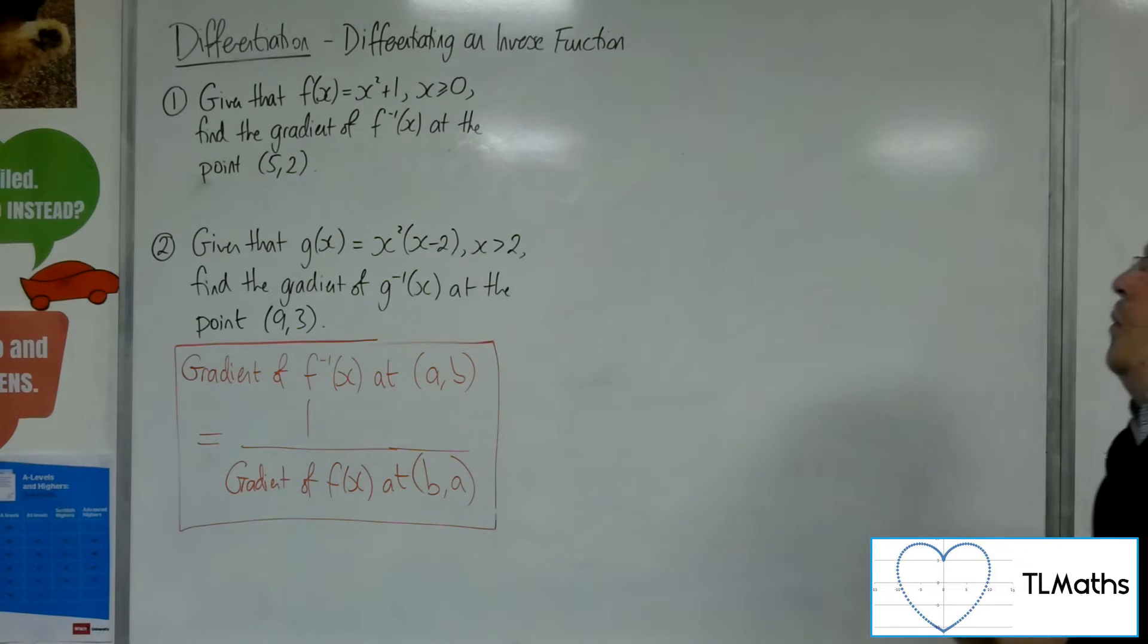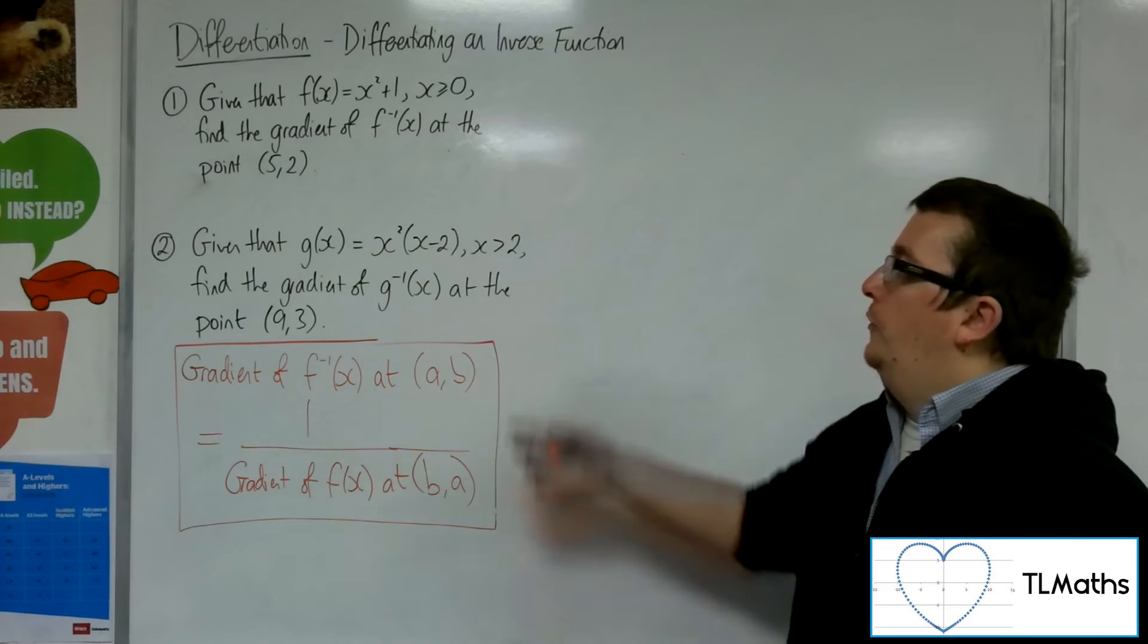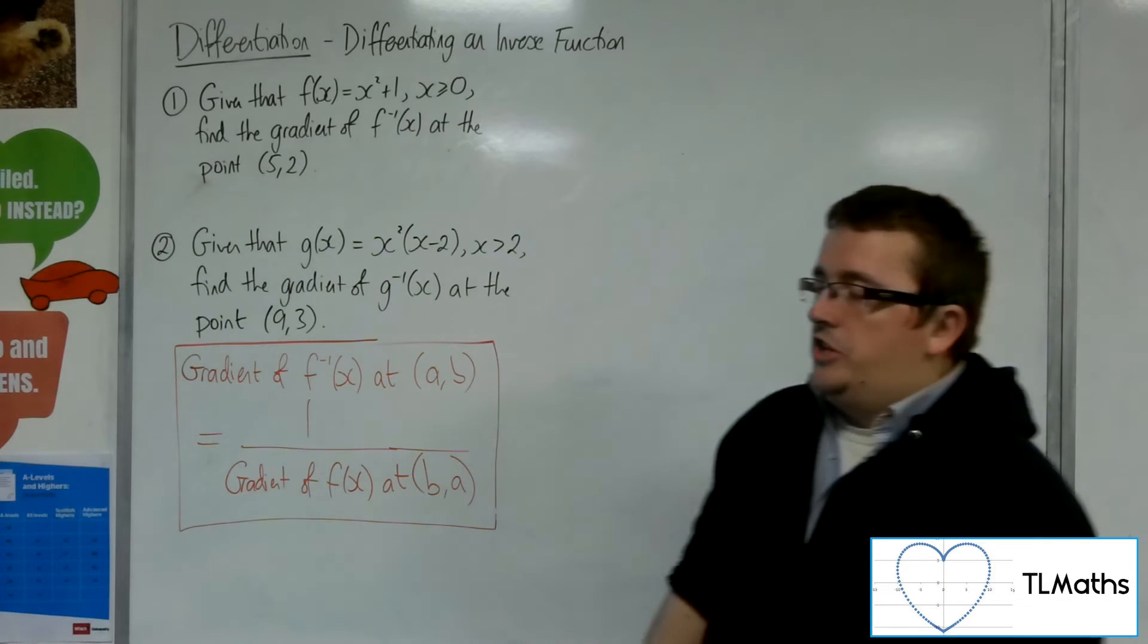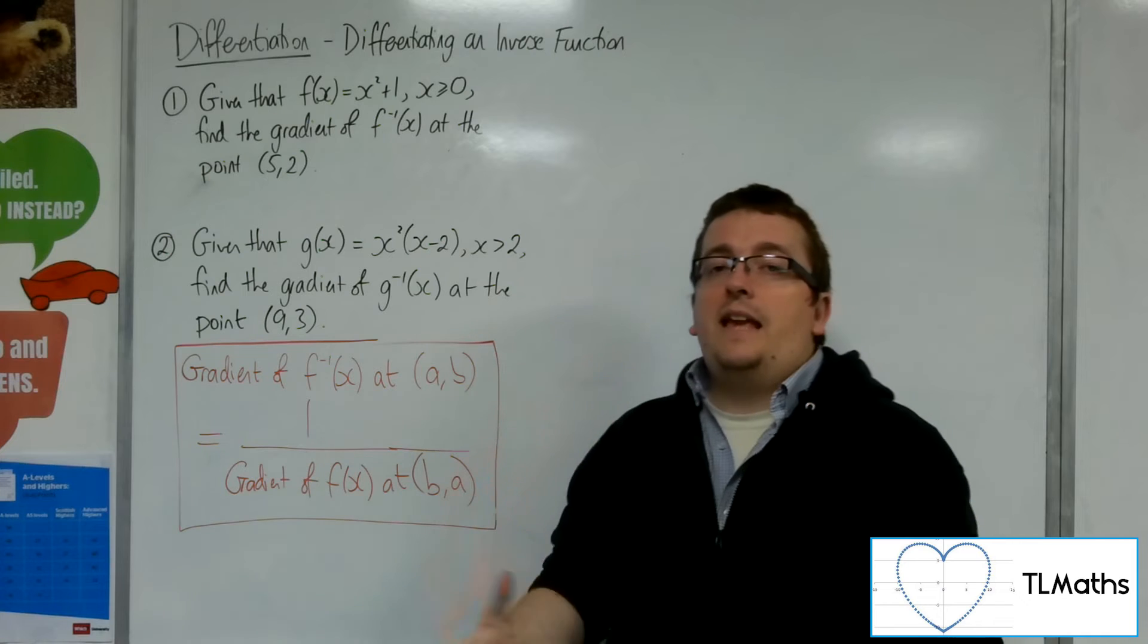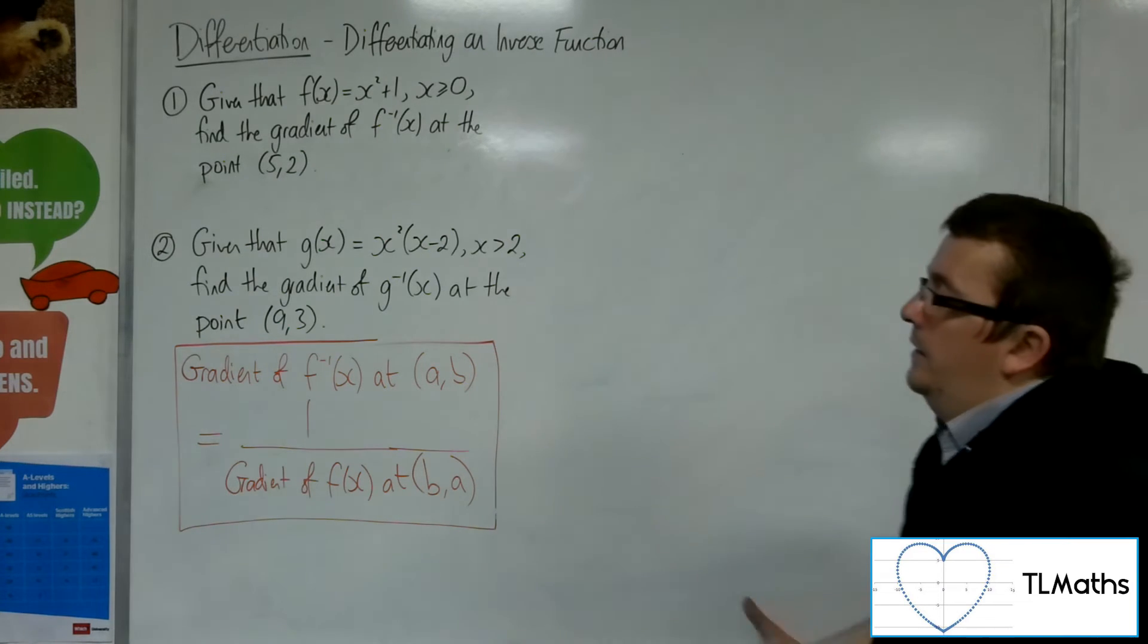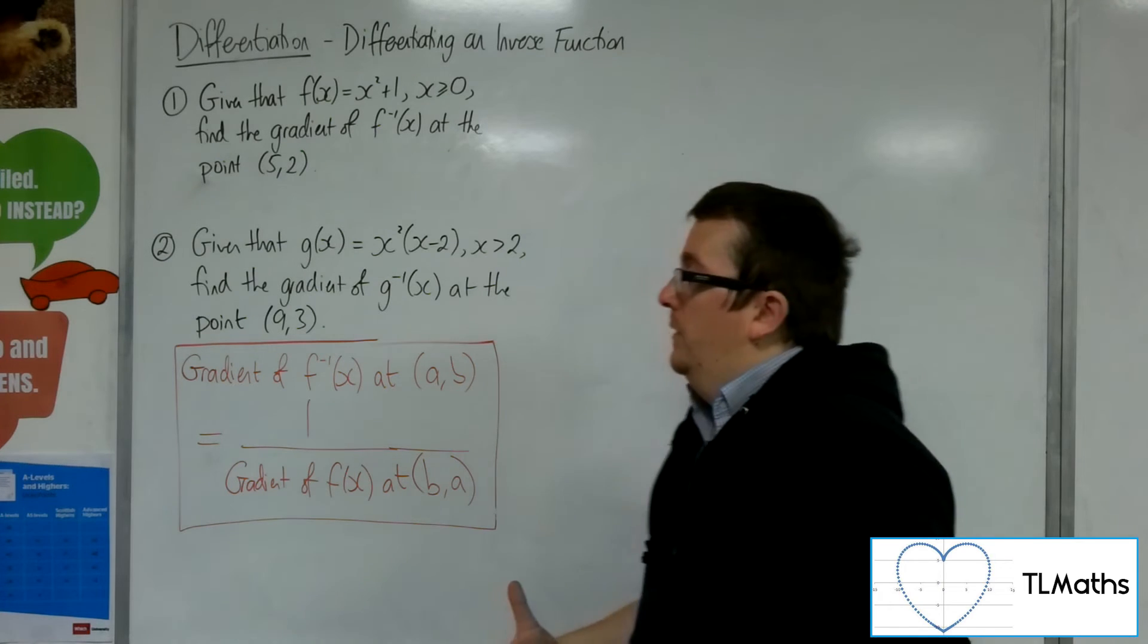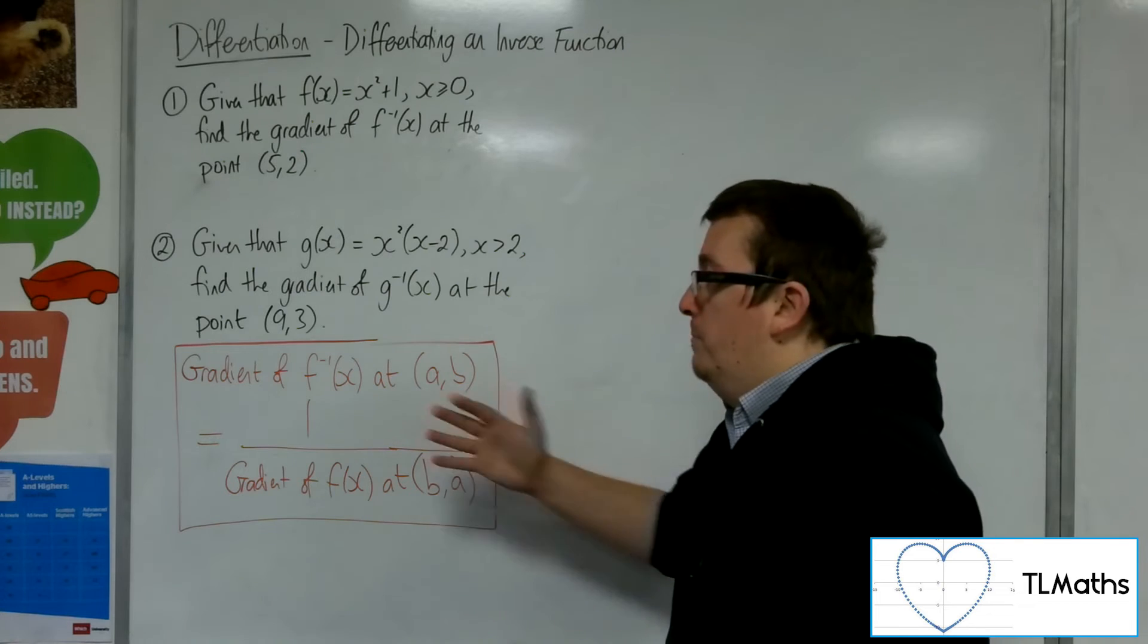Now, there is no way of finding an algebraic inverse function for g. There's no way that I can put y equals that, swap the x's and y's, and then get that in terms of y equals some function of x. There's just no way of doing it. So, I can now use this method to do it.